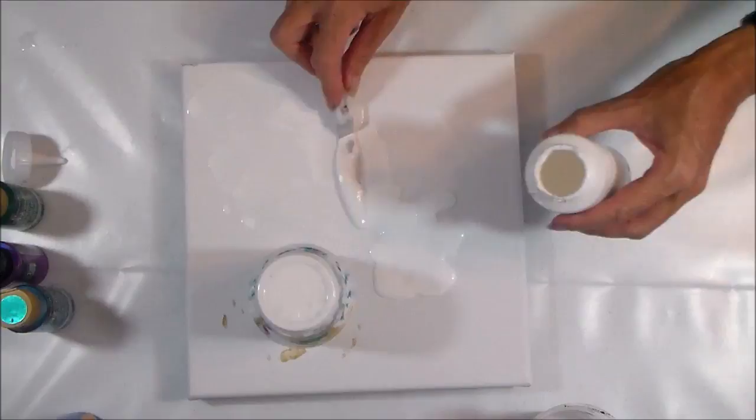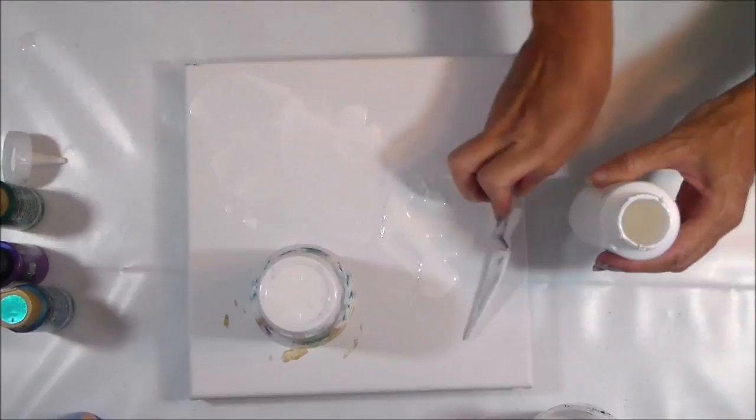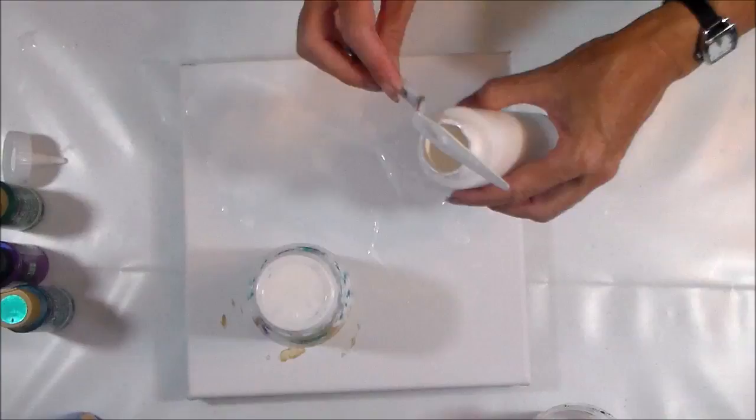These paints sometimes just cell on their own, especially this white. It's just white, Floetrol, some water, and a minimal amount of silicone. But when I put it on the canvas and spread it about, it just cells up on its own and I didn't want it to do that.